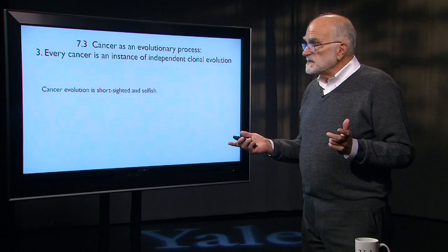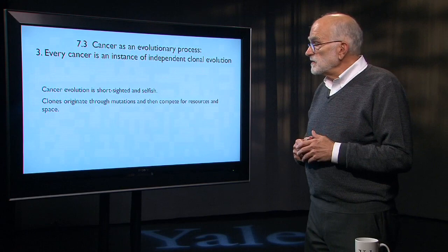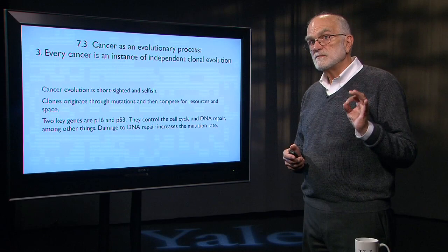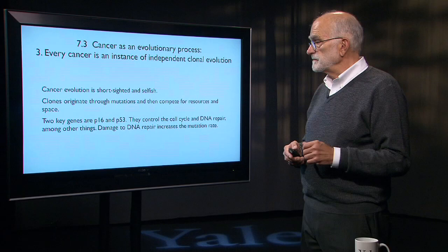This kind of evolution is short-sighted and selfish. Clones originate through mutations. They then compete for resources in space. Two of the key genes that are involved are called P16 and P53. These are genes involved in cell cycle control and DNA maintenance.